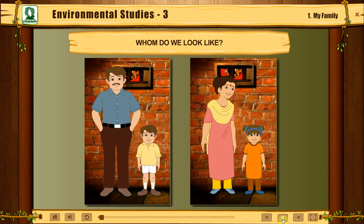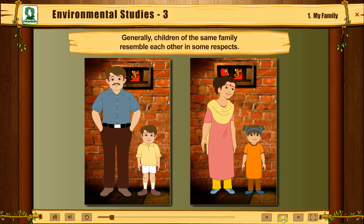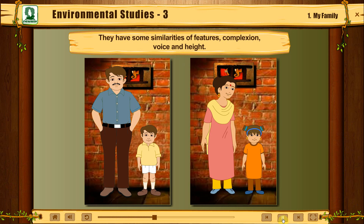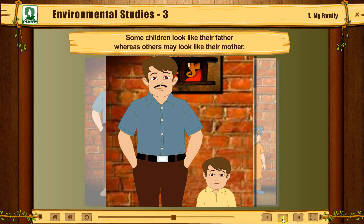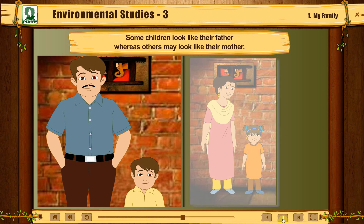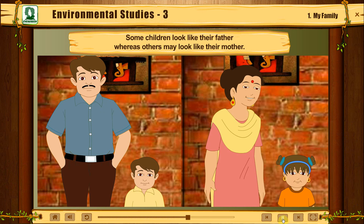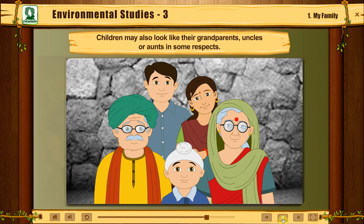Whom do we look like? Generally, children of the same family resemble each other in some respects. They have some similarities of features, complexion, voice and height. Some children look like their father whereas others may look like their mother. Children may also look like their grandparents, uncles or aunts in some respects.